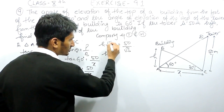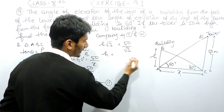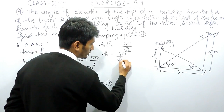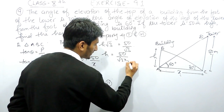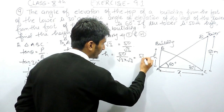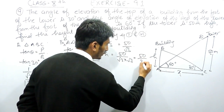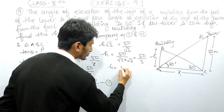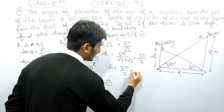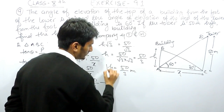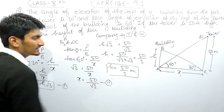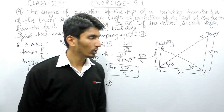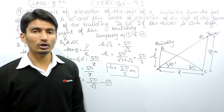Shifting the √3 to the other side: h = 50/(√3 × √3) = 50/3. So the height of the building is 50/3 meters. This is how you can solve this question.